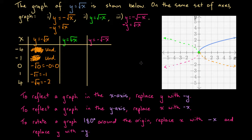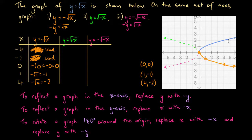So we have three points for the orange graph: (0, 0), (1, −1), and (4, −2). Let's graph these. The point (0, 0) is at the origin, (1, −1) is one unit right and one unit down, and (4, −2) is four units right and two units down. These points do lie on the curve we predicted, confirming that this is the function y equals minus square root of x — the blue graph reflected in the x-axis.